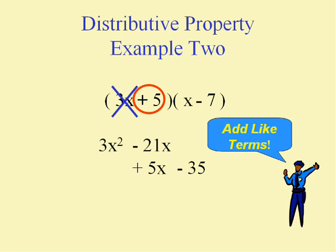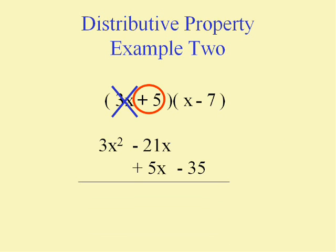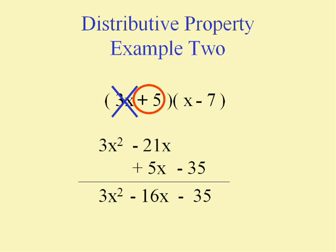Oh, we can't finish until we've added all like terms. Adding these, I get 3x² minus 16x, because negative 21x and positive 5x make the minus 16x. And if you don't have anything to add with somebody, like the negative 35, just write the negative 35. And there is your answer.